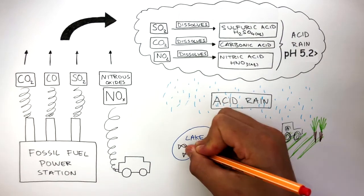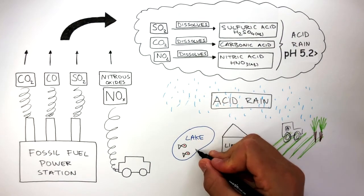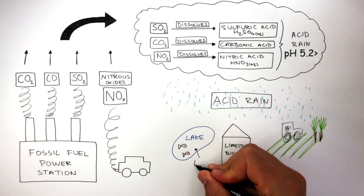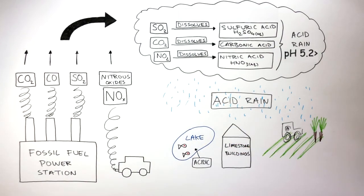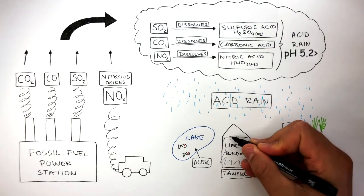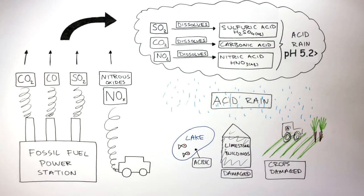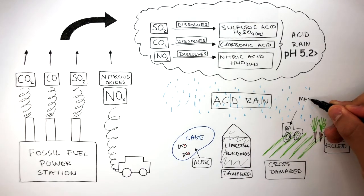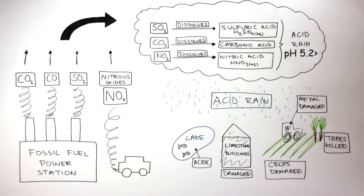Acid rain causes the fish and other organisms to die because the water becomes acidic. Limestone buildings are damaged as the calcium carbonate reacts with the acid in the rainwater. Crops are damaged and trees are killed as the soil becomes acidic. And metal objects are damaged as well as the metal corrodes when it reacts with the acids in the rainwater.